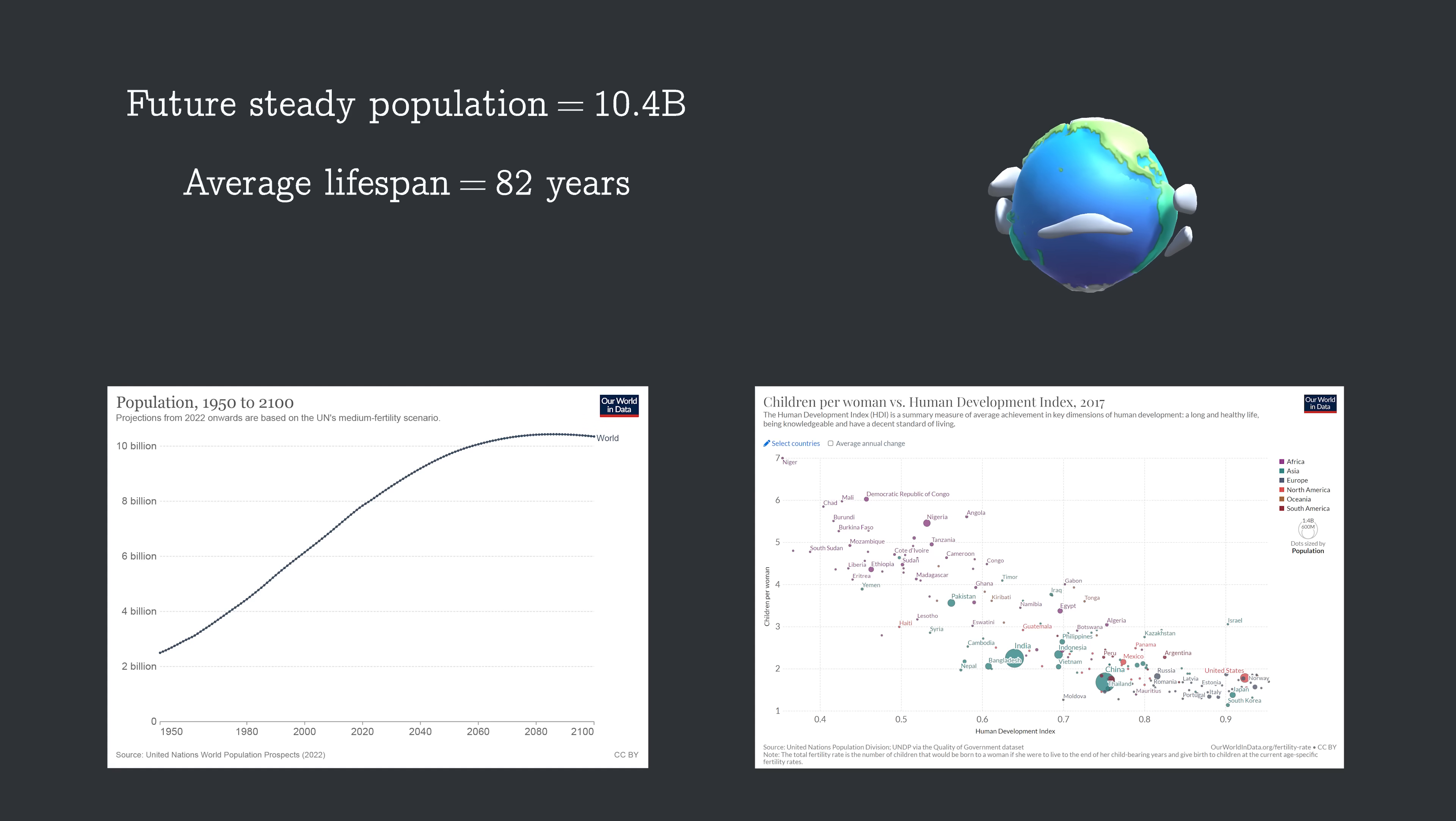Some people will live longer than that, and some people will die earlier than that. But on average, every 82 years, the population will replace itself. So 10.4 billion people will be born every 82 years, getting us to an average birth rate of 127 million people per year.